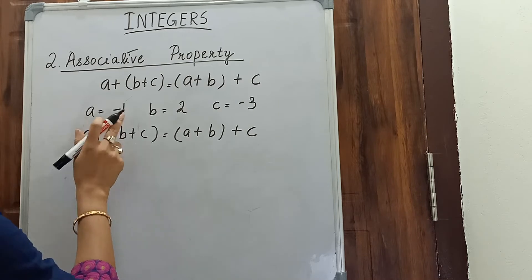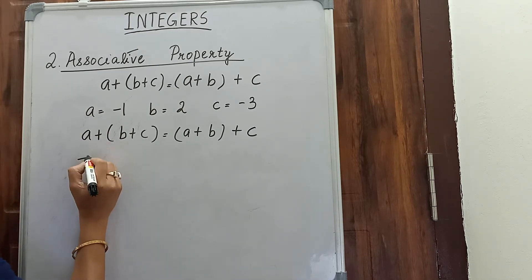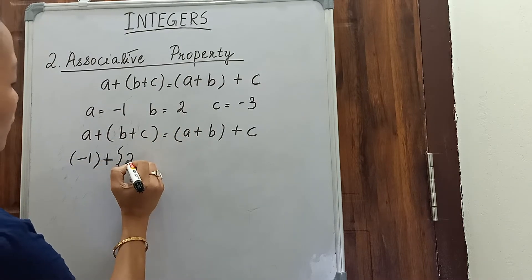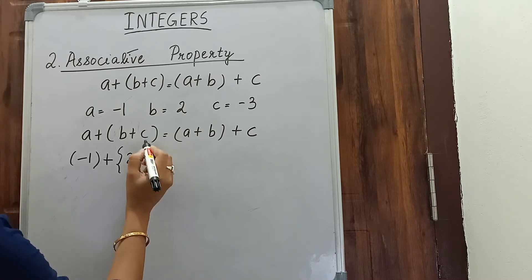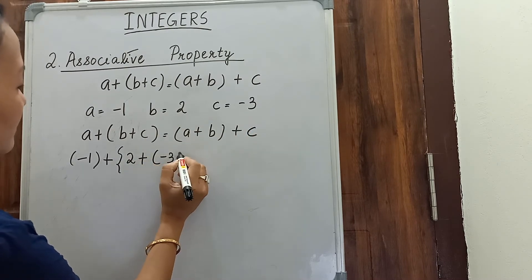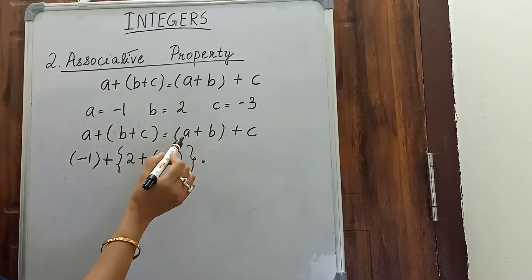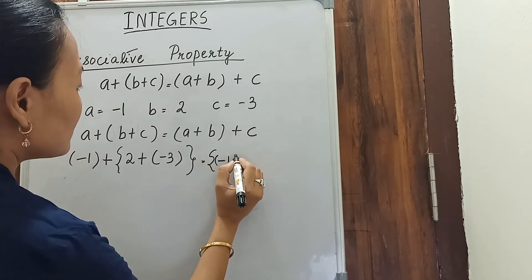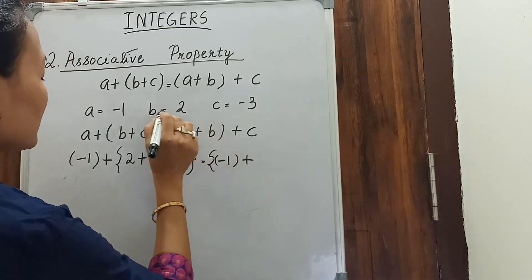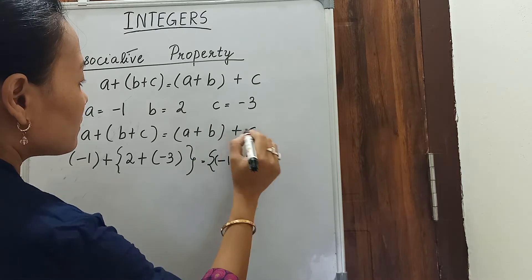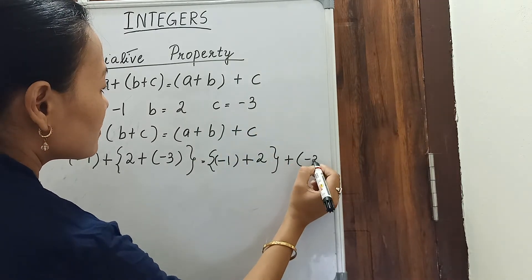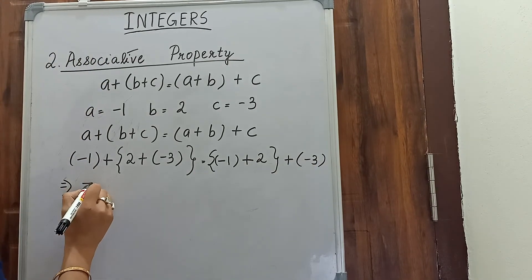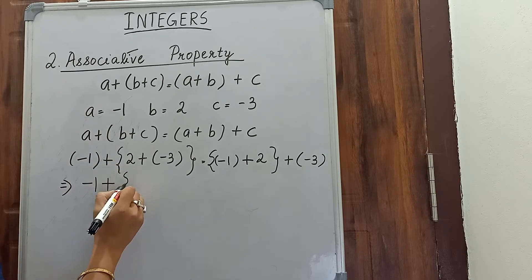So, (a plus b) plus c equals a plus (b plus c). On the left-hand side, in place of a we put minus 1, plus b is 2, plus c is minus 3. On the right-hand side, a is minus 1 plus b is 2, in the same bracket, plus c is minus 3.